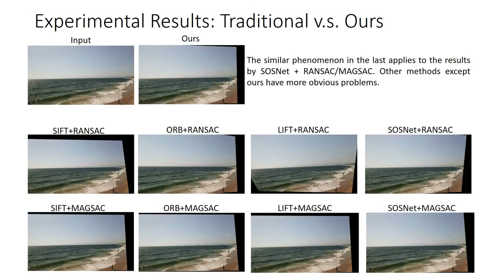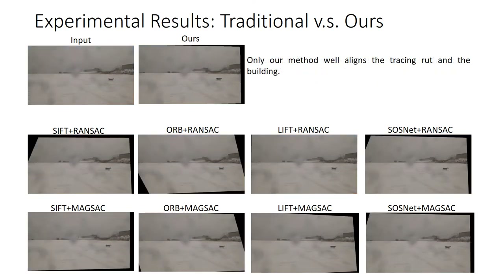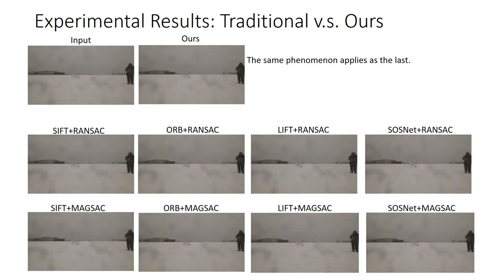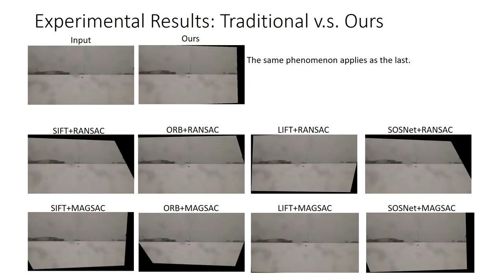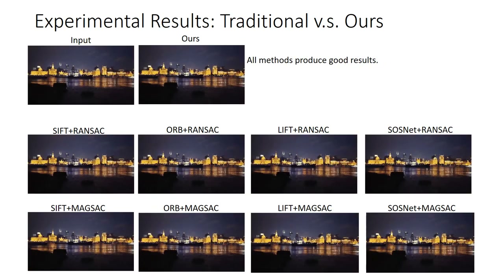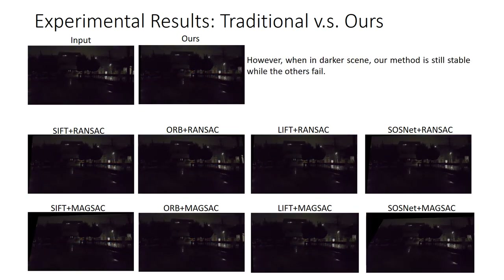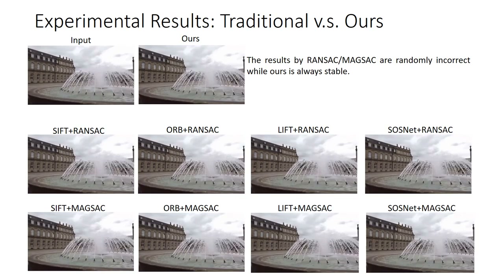The same phenomenon applies in the following examples. In one example, only our method can align the tracing rut and the building. When the scene contains rich textures, all methods produce good results. However, when scenes get darker, our method remains stable while others fail. In another example, a large foreground fountain causes difficulties for outlier rejection methods such as RANSAC and MAGSAC, whereas our method can align the background building successfully.